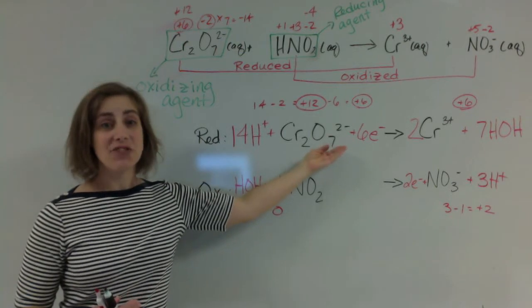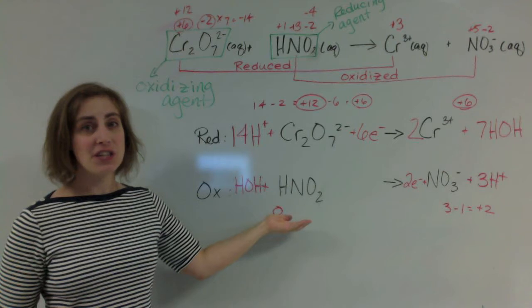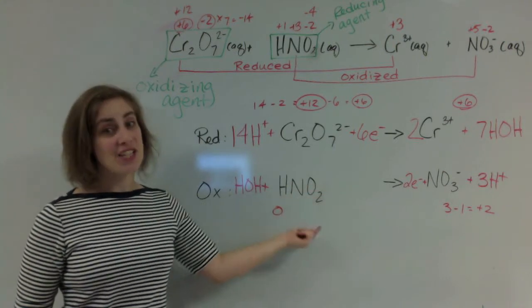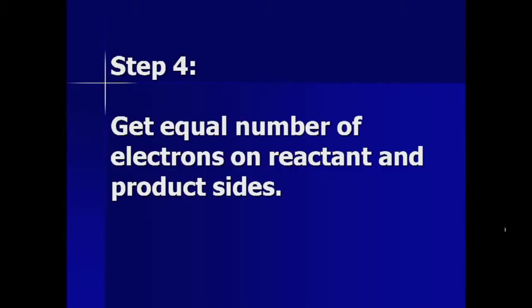This gained six electrons, where did it get them from? Well, it's supposed to have got them from this nitrogen. According to this half reaction, that nitrogen only gave up two electrons. So they're not balanced yet. We need to balance those first, then we can add it all together.